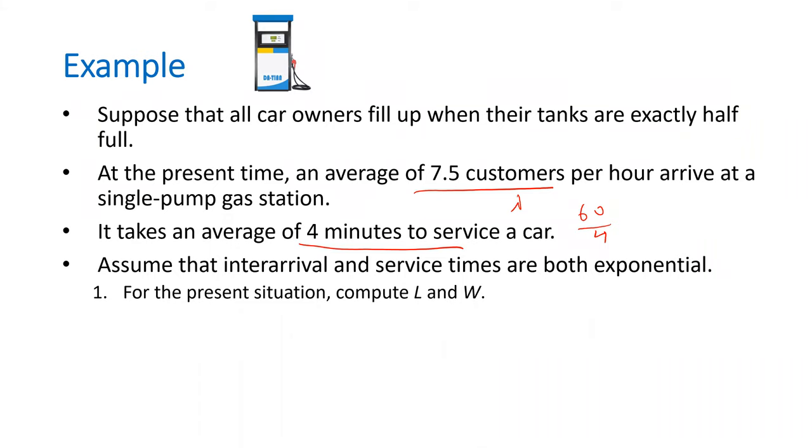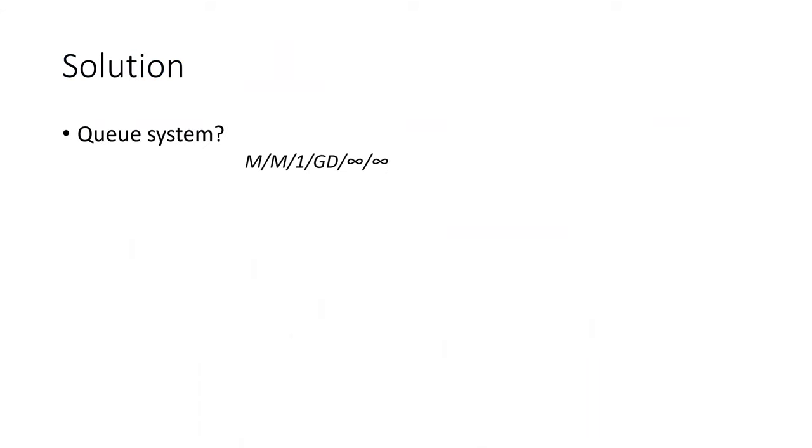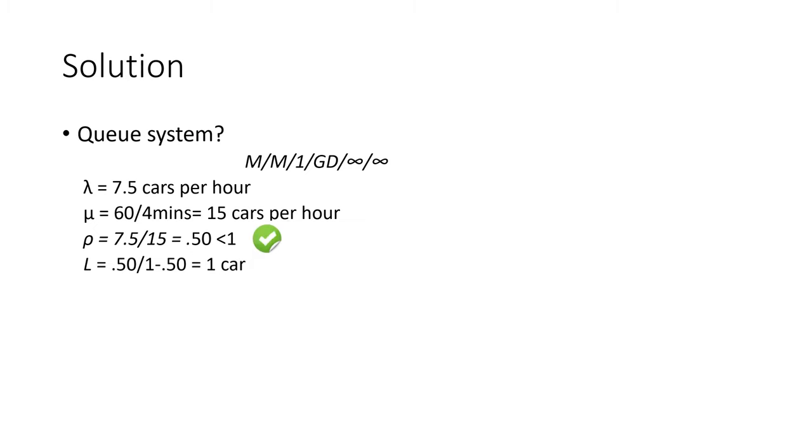For the present station, compute L and W - expected number of cars in the gas station, including in line and being served, and expected time they spend at a gas station. So what's the queuing system? M/M/1. Lambda is 7.5, mu is 60 over 4, which is 15. Your rho is 0.5, less than one. L is rho over 1 minus rho, which is one car. W is L over lambda, which is 1 over 7.5, 0.13 hours. So it's pretty efficient.